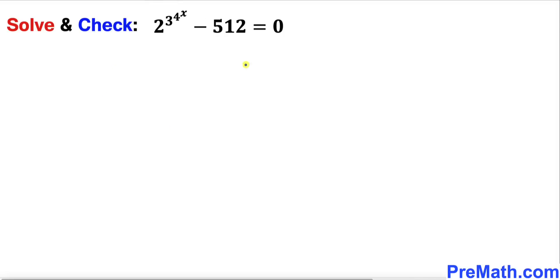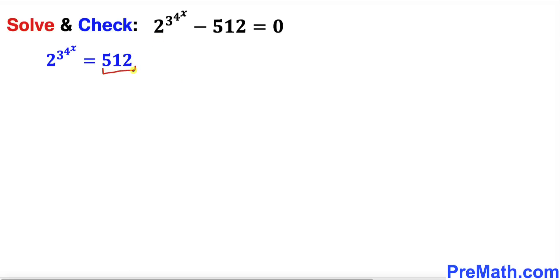Let's get started with the solution. The very first thing we are going to do is move this negative 512 to the right hand side. Now let's focus on 512 on the right hand side — we can see that 512 is equal to 2 power 9.